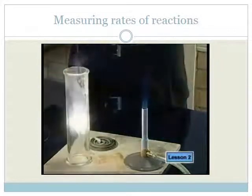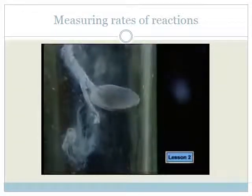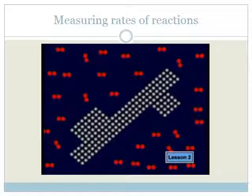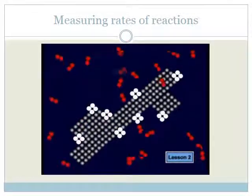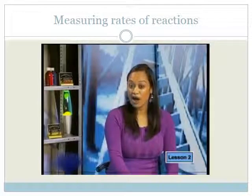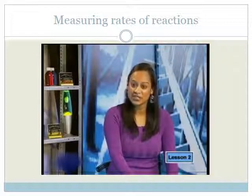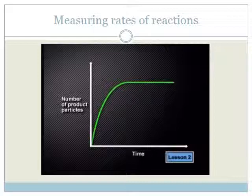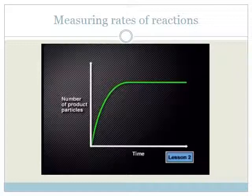Let's consider the combustion of magnesium in oxygen as an example. Magnesium reacts with oxygen to form magnesium oxide. Before the reaction starts, we have magnesium atoms and oxygen molecules as the reactants — there is no product or magnesium oxide. The reaction starts when energy is added, and then the atoms of magnesium and oxygen molecules combine to form magnesium oxide particles in a very short time. Can you sketch a graph to show how the number of product particles changes for this reaction? At the start, there are no particles of magnesium oxide, but once the reaction starts, the number of product particles increases rapidly and then remains constant.